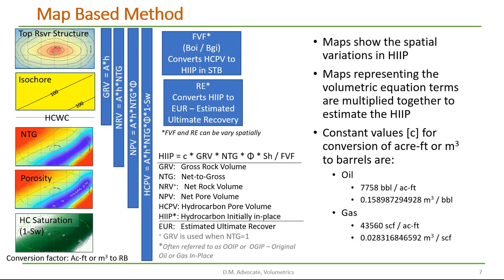There are various methods for doing volumetrics. In my experience, the map-based method is one of the most common and also the most useful, because the maps show the spatial variation in the hydrocarbons initially in place. The method is that individual maps representing the volumetric equation terms are multiplied together to estimate the hydrocarbons initially in place.